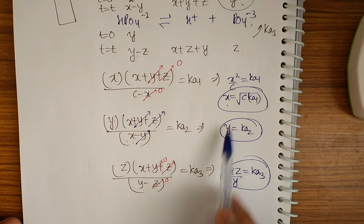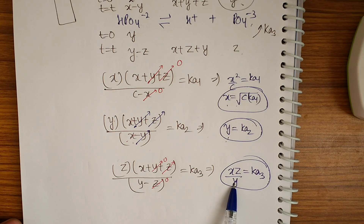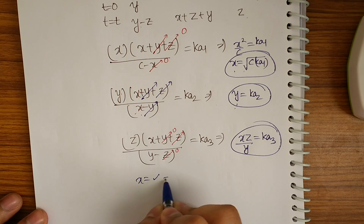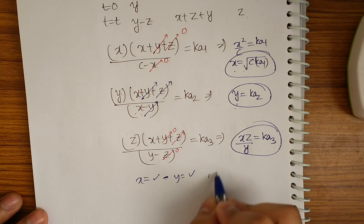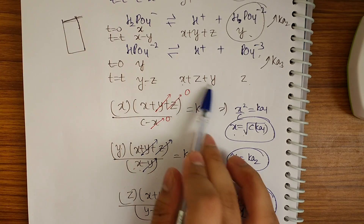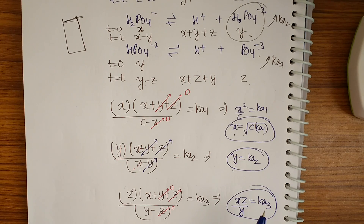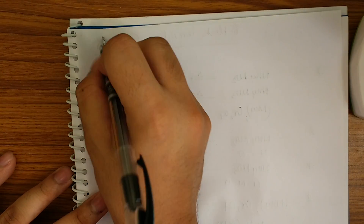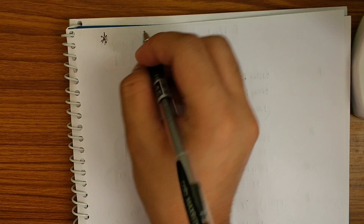For the third equilibrium: z·(x+y+z) / (y−z) = Ka3. Simplifying by ignoring small terms, x·z / y = Ka3. Since we have x and y already, we can solve for z. Then the total H⁺ concentration is x+y+z, and pH = −log(x+y+z).